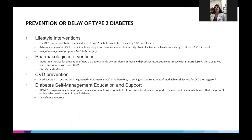As the obesity epidemic rose in the US, we saw a subsequent rise in the incidence of diabetes — they go hand in hand. Lifestyle intervention is always the first step, even in patients on pharmacotherapy. The Diabetes Prevention Program Trial showed that the incidence of type 2 diabetes could be reduced by almost 60% over three years with lifestyle interventions alone — a very significant impact.